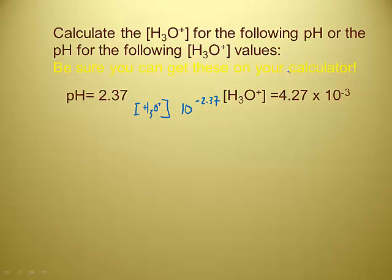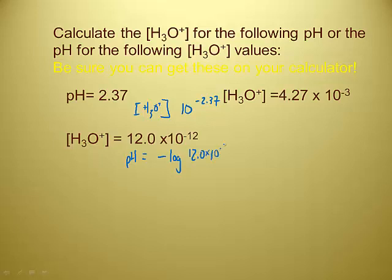Now they're giving you the hydronium ion concentration and want pH. So pH should be equal to the negative log of 12.0 times 10 to the negative 12. Now that's a very small concentration, so I'm going to assume a relatively high pH. 10.92. That's what I got also.